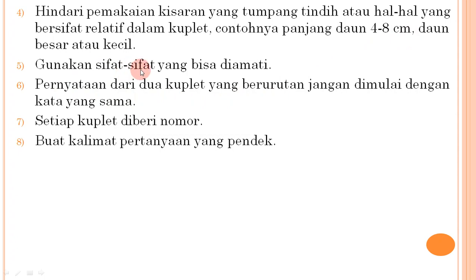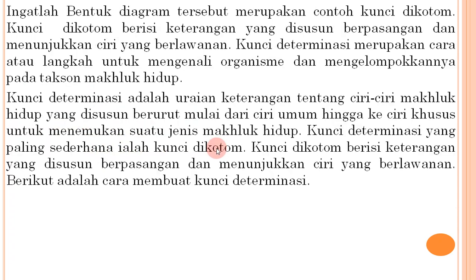Contoh hal yang dihindari dalam kuplet: 'panjang daun 4-8 cm' atau 'daun besar atau kecil'. Selanjutnya, gunakan sifat-sifat yang bisa diamati; pernyataan dari dua kuplet berurutan jangan dimulai dengan kata yang sama; setiap kuplet diberi nomor; dan buat kalimat pernyataan yang pendek. Kunci dikotom berisi keterangan yang disusun berpasangan dan menunjukkan ciri yang berlawanan. Kunci determinasi adalah uraian keterangan tentang ciri-ciri makhluk hidup yang disusun berurut mulai dari ciri umum hingga ke ciri khusus untuk menemukan suatu jenis makhluk hidup.